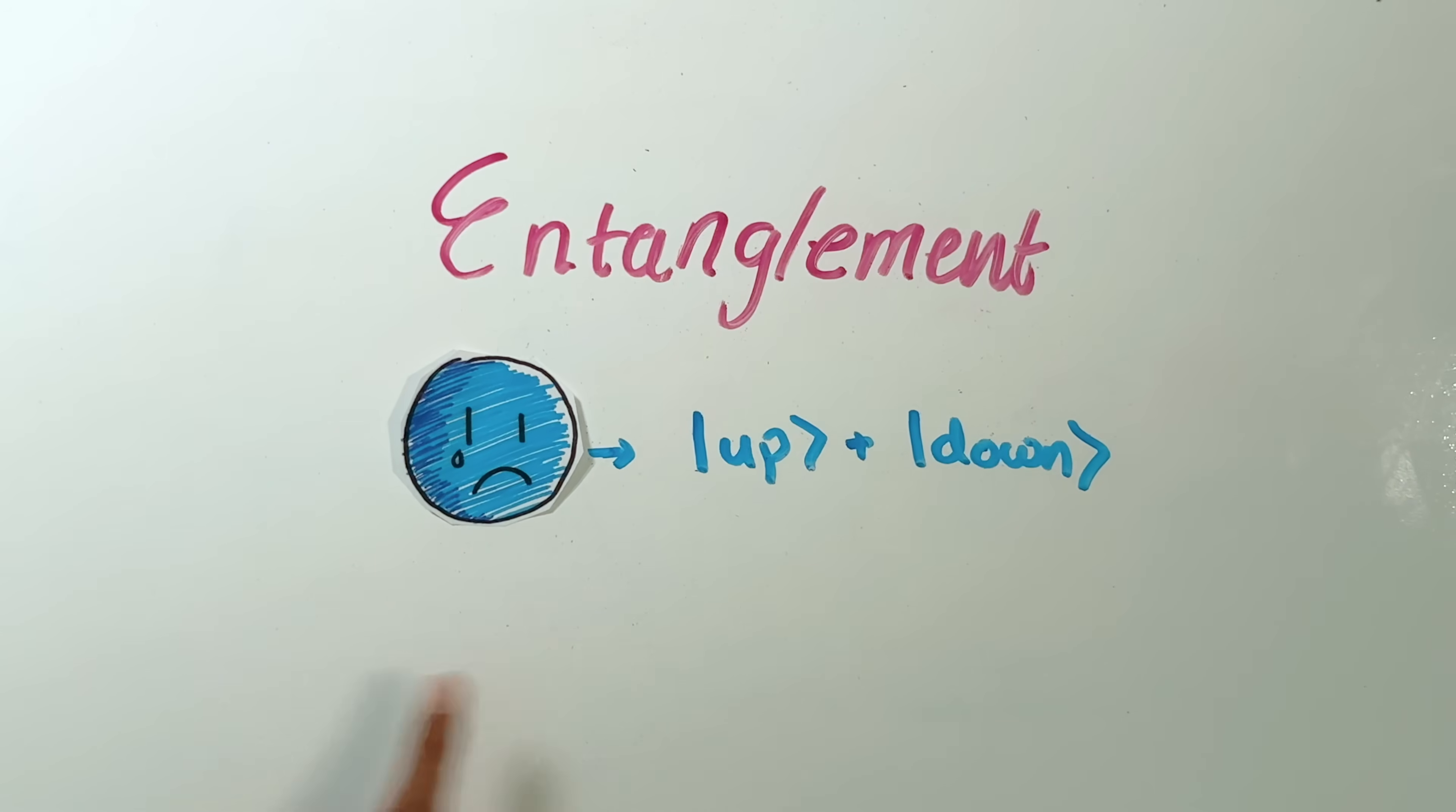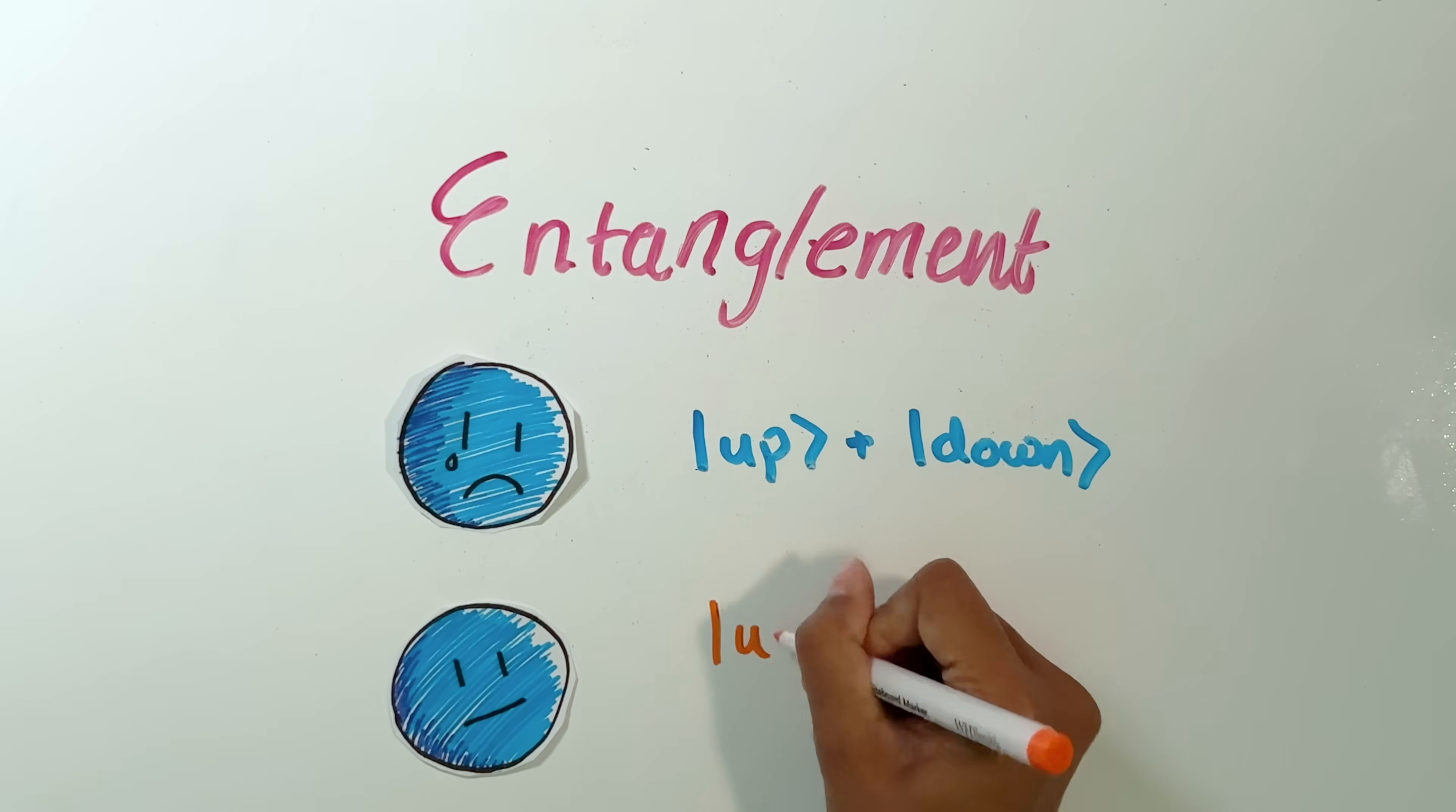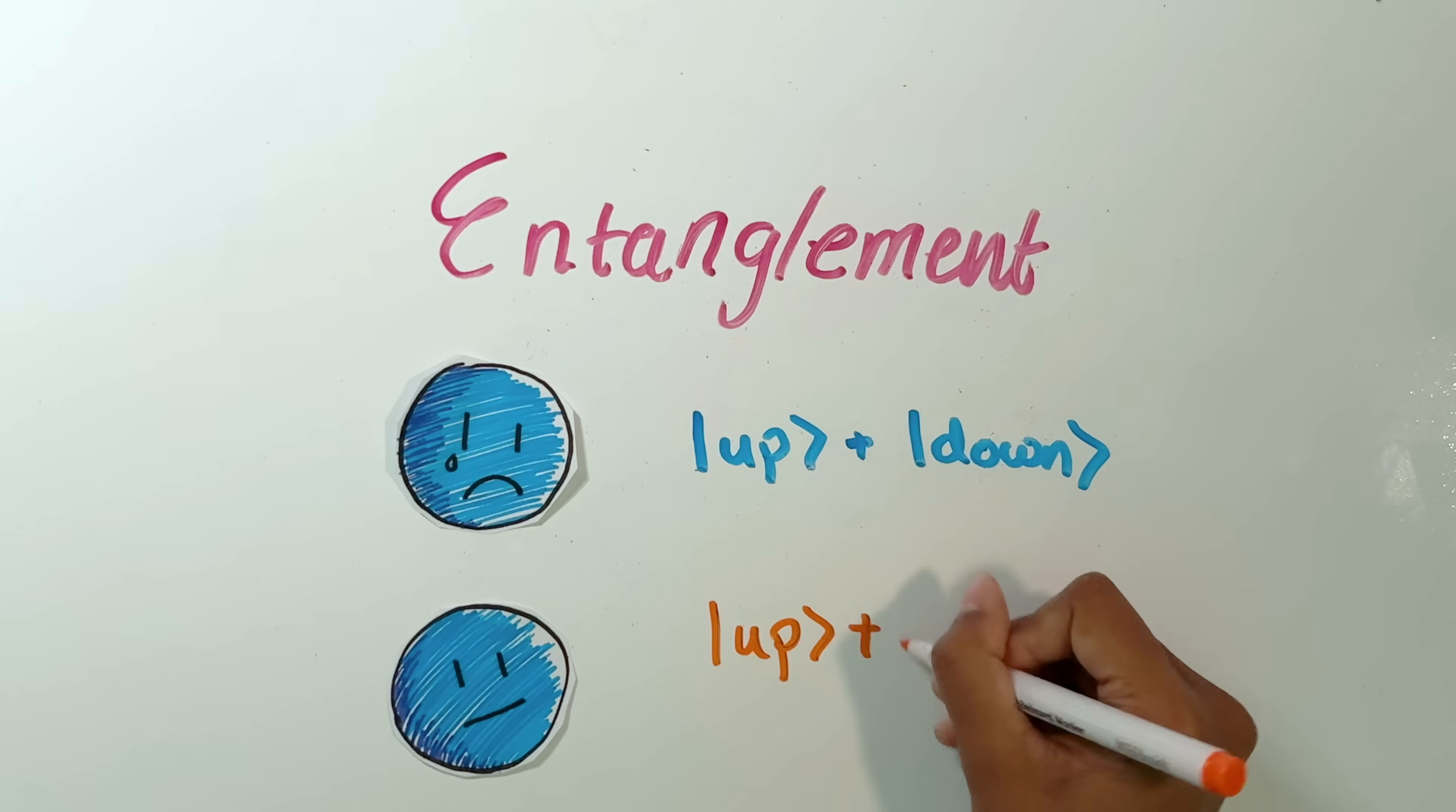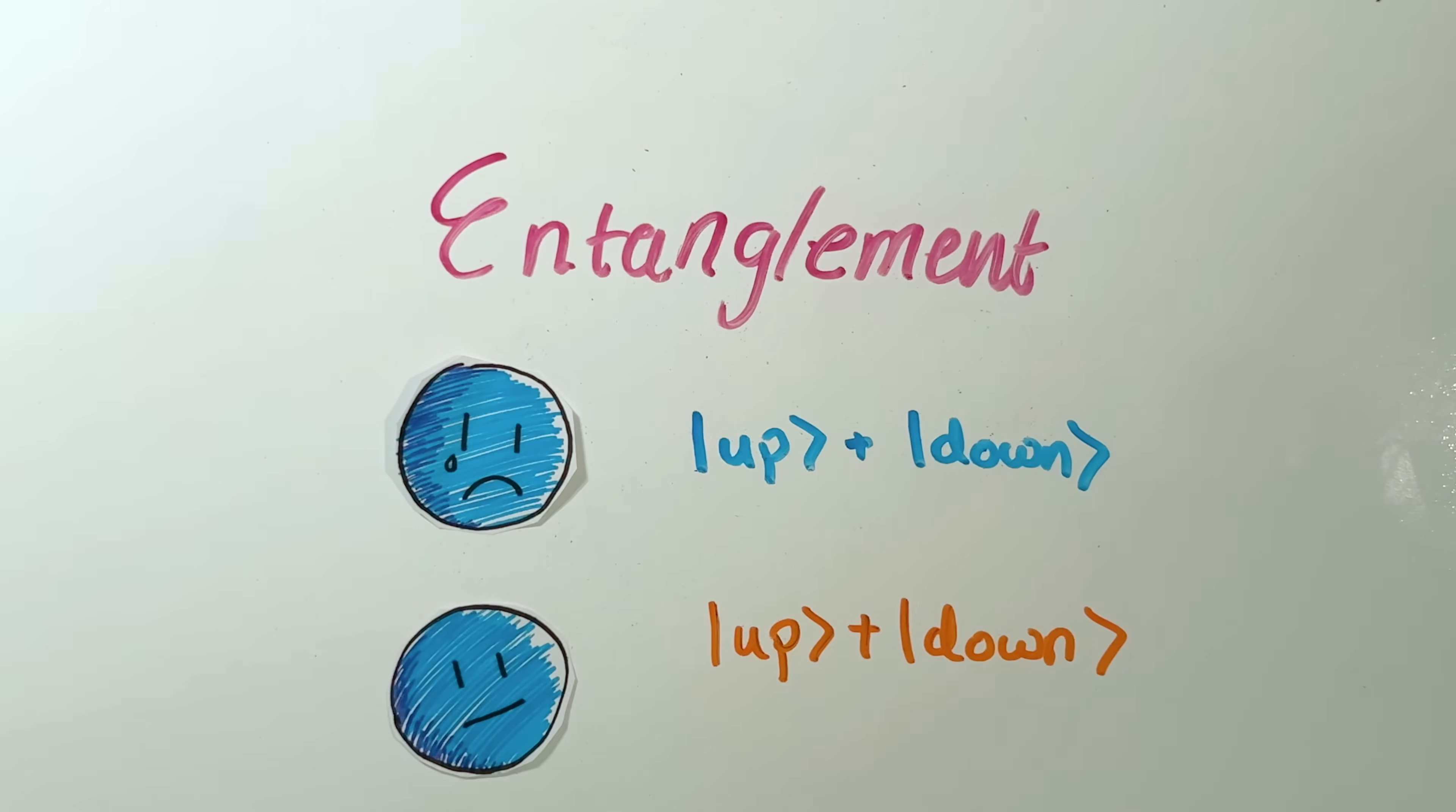Imagine that this electron happened to start off in this state. Then imagine another electron comes by and it happens to have the same state. So its state is up plus down at the same time. Well, is this state entangled? Well, unfortunately, no, it's not. And we can see that by applying our rule. Is it possible to talk about the state of each of these electrons separately?